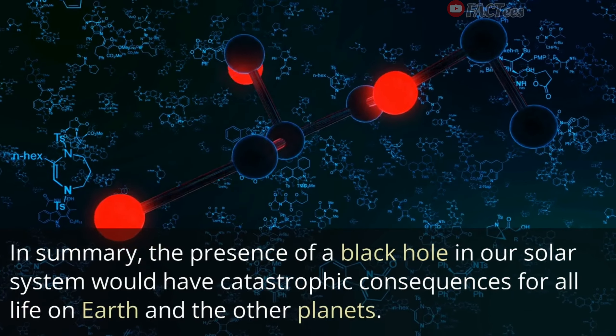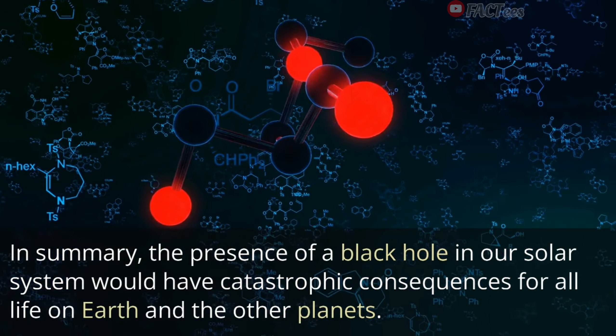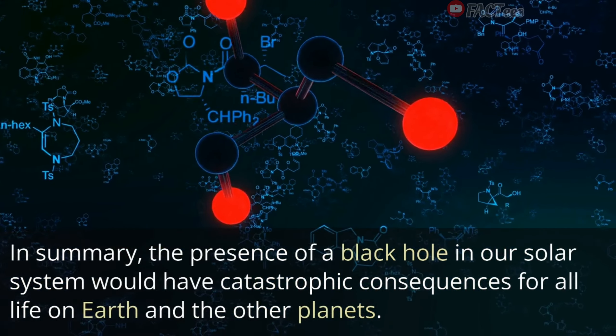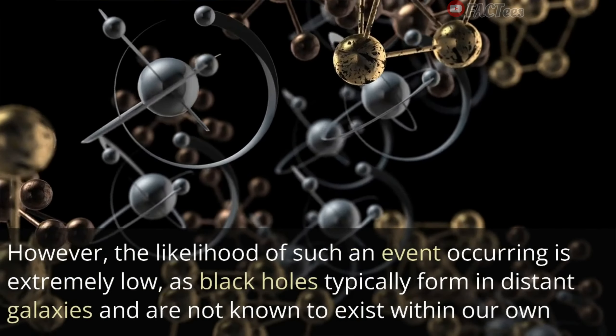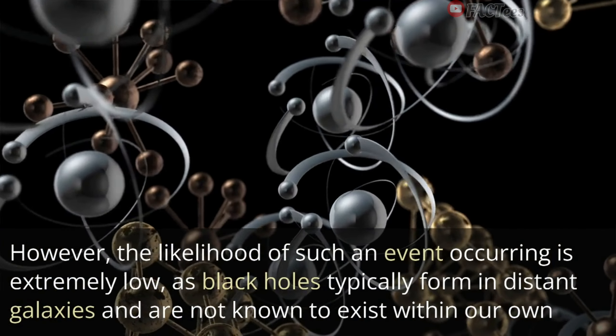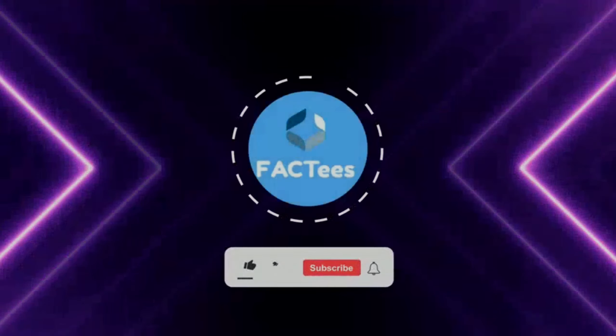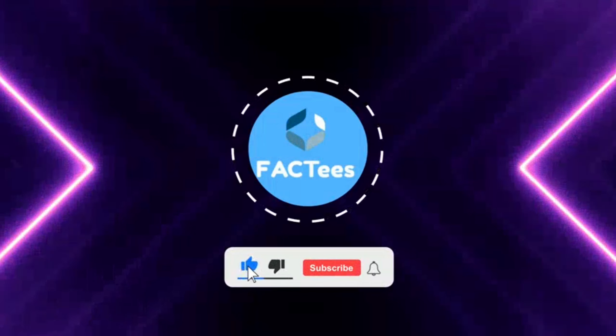In summary, the presence of a black hole in our solar system would have catastrophic consequences for all life on Earth and the other planets. However, the likelihood of such an event occurring is extremely low, as black holes typically form in distant galaxies and are not known to exist within our own.